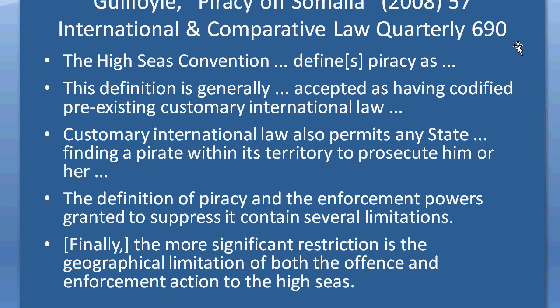'Customary international law also permits any state finding a pirate within its territory to prosecute him or her.' Here I'm using one of Garner's explicit connectives — I'm introducing a new point and I've signalled that with the word 'also'. That signals I am building on my previous talk about definitions, but introducing a new related point. Then: 'The definition of piracy and the enforcement powers granted to suppress it contains several limitations.' Here there's an echo link back to the previous concept of a definition, but also this is the kind of topic sentence that sets up sequencing — you'd expect it to be followed with a firstly, secondly, thirdly structure.